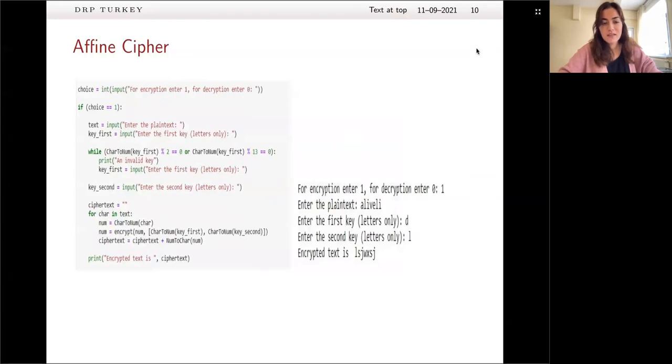So let me continue. So we begin our code with choice. We ask the user if she wants to encrypt or decrypt. After that, we wrote an if else statement. So on the right hand side, you can see our results. And we ask and user wants encryption because she entered one and she entered the plain text. And we used first and second keys here, D and L, which are basically the same as A and B on the previous slides. And our encrypted text is this text that you can see from on the right corner. So this is the encryption part.